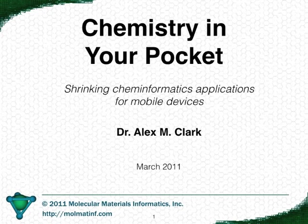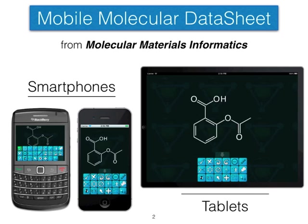Good morning. You might want to think of this as part two of Steve's talk because it's the same general subject, and we've been working together quite a lot in the last few months. Before I start talking more about these mobile devices, most of the subject material in this talk is based on a single product currently available. It's called the Mobile Molecular Data Sheet, produced by my company, Molecular Materials Informatics. This app is available for BlackBerry smartphones and all Apple devices — iPhones, iPods, and iPads. This talk is kind of a feature review, but I want you to think of it more as a tour of things that are actually possible on these mobile devices.